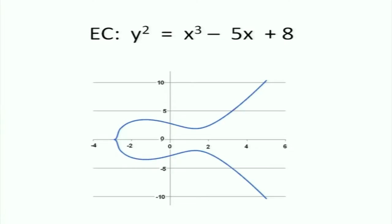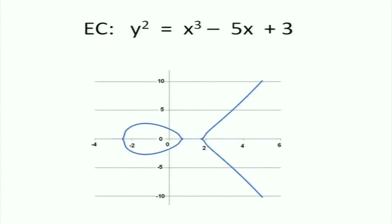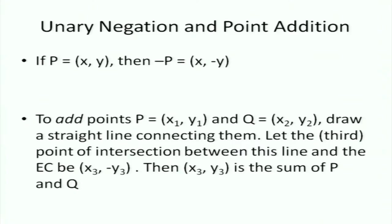This is an example of an elliptic curve over reals — all sorts of shapes, here it's in two pieces. The two things we need to define are unary negation and point addition. If the coordinates of a point P are (x, y), then the negative of that point is simply (x, −y). So −P is simply x comma minus y.